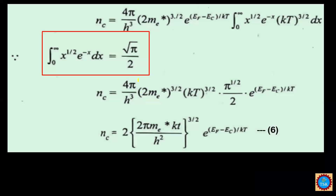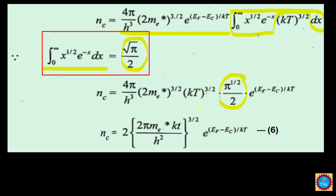After substitution, NC equals (4π / h³) × (2Me*)^(3/2) × e^((EF − EC)/kT) multiplied by the integral from 0 to infinity of x^(1/2) × e^(−x) × (kT)^(3/2) dx. The solution to this integral is √π / 2. Substituting this value and simplifying the equation gives the final result.